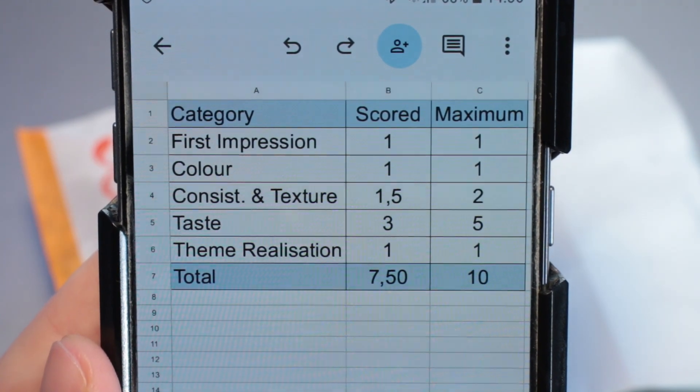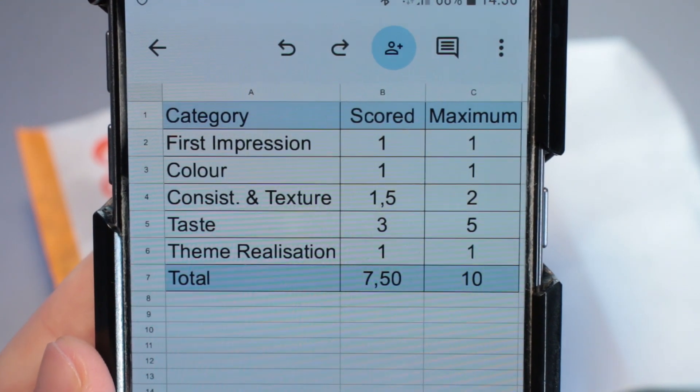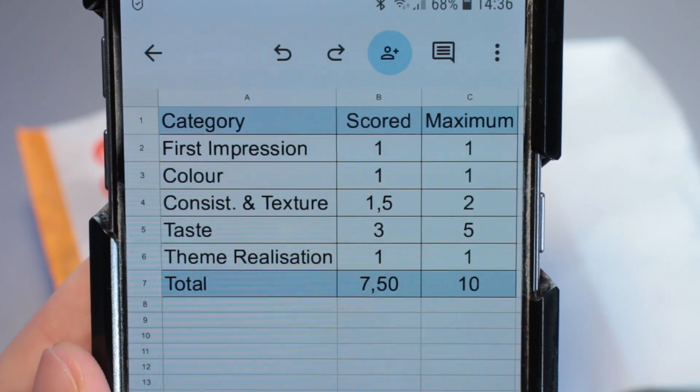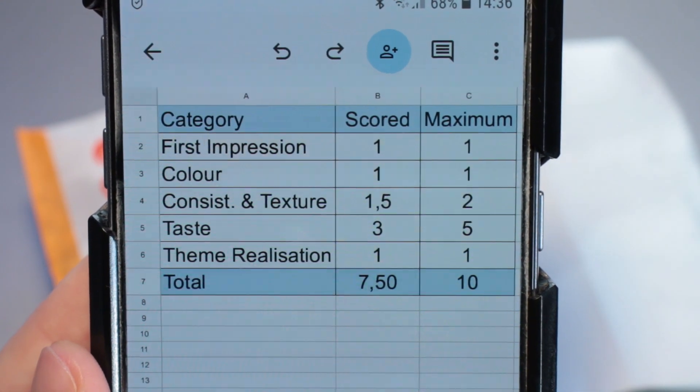Consistency and texture-wise, I give 1.5 out of two available points. The outside was crunchy enough, the inside was creamy enough, but there was also a bit of a slime texture too, and I don't like the sliminess too much.